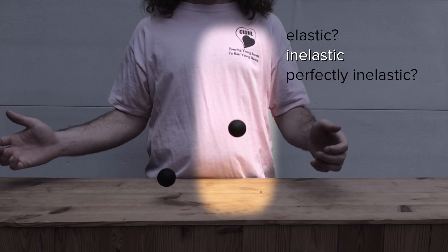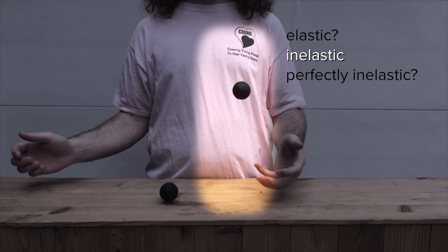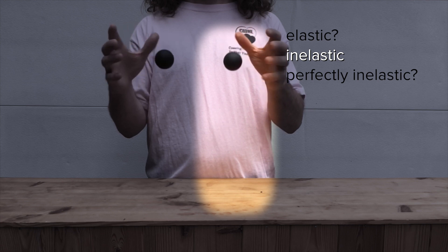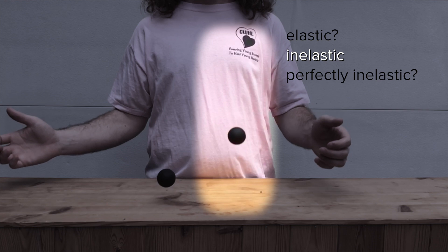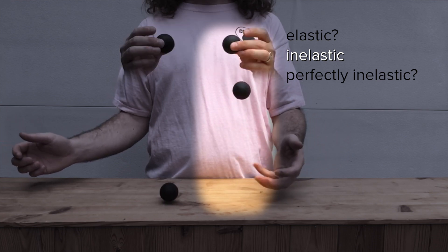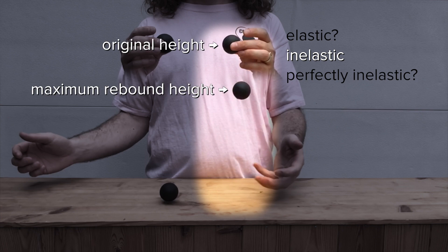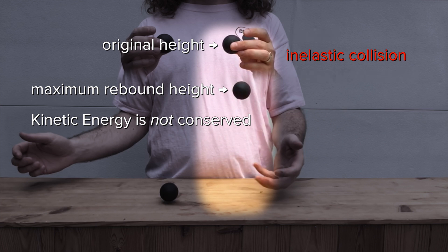Kinetic energy is not conserved, so it must be an inelastic collision. But, how do you know kinetic energy is not conserved? I see. If kinetic energy were conserved, then the ball would have the same kinetic energy leaving the table as it does when it strikes the table. Therefore, it would go up to the same height from which it was dropped. So, because this ball does not go all the way up to its original height, kinetic energy is not conserved, and it is an inelastic collision. Very nice.